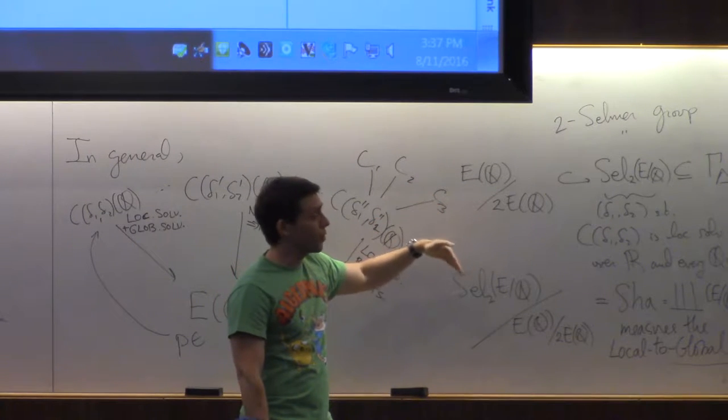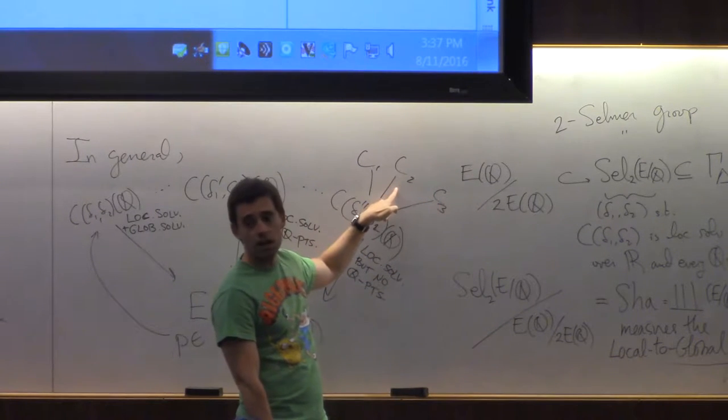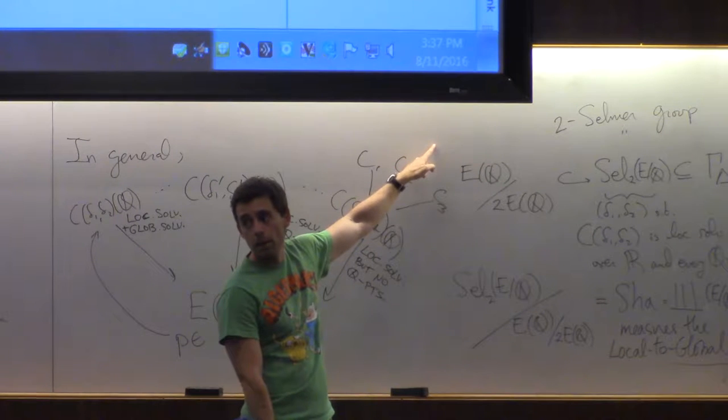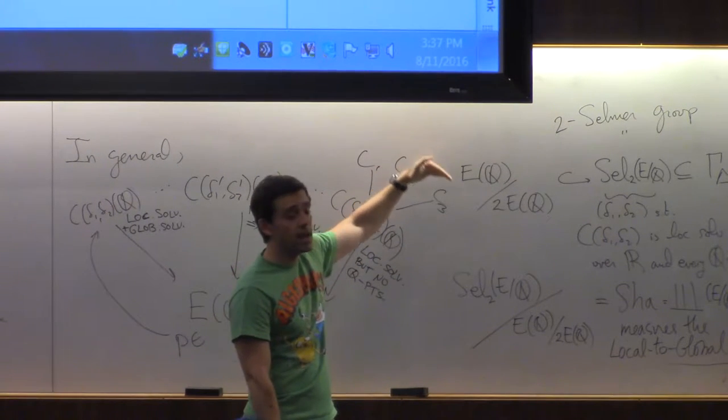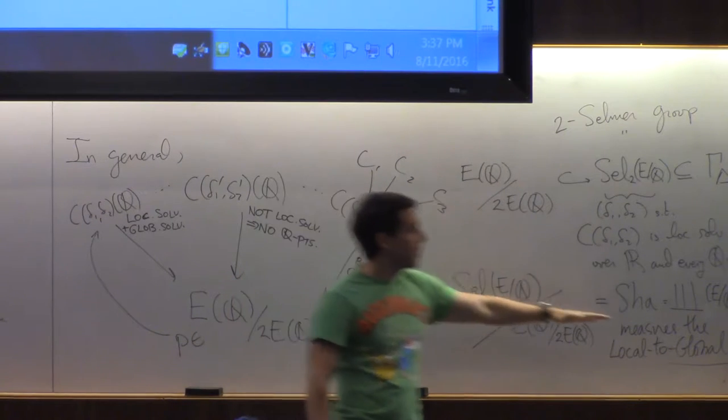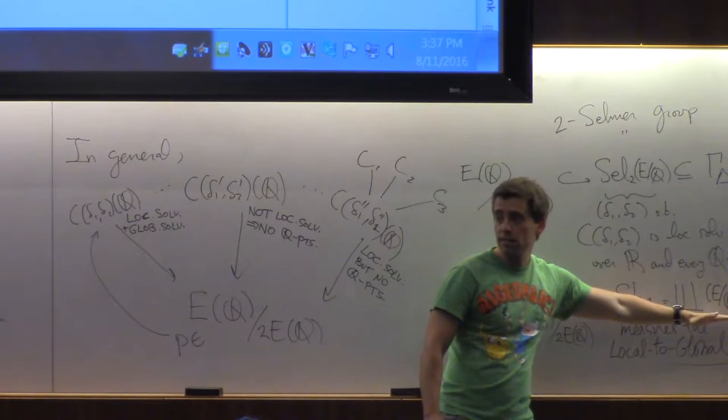But if there is a fourth torsion point, I might find it here and I have to go one layer up. I would be able to go to some layer where that doesn't happen, but we do not know that SHA is finite.